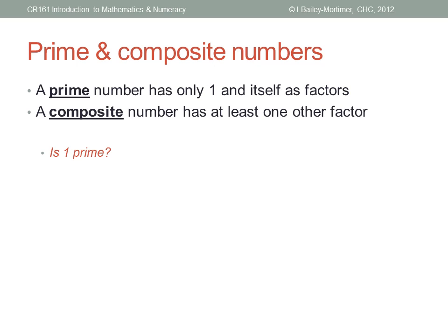For me, as a number theorist, one is not prime. It's special because of the way multiplication works. Two is the first prime number, and the only even prime. Three is the first odd prime, and so on.